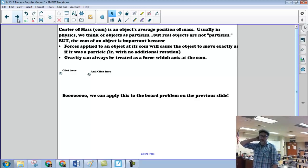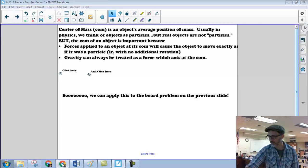But it turns out that the center of mass, COM, of an object is important for two reasons. One, forces applied to an object at the center of mass will cause the object to move exactly the same as it would if it was a particle. In other words, it's not going to rotate. If you push an object at its center of mass, it doesn't create any additional rotation. Secondly, gravity can always be treated as a force that acts at the center of mass.